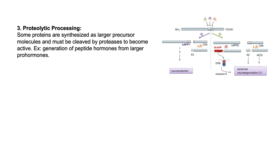Next is proteolytic processing. Some proteins are synthesized as larger precursor molecules and must be cleaved by proteases to become active. Examples include the activation of certain enzymes and the generation of peptide hormones. For instance, the cleavage of the larger protein APP produces a smaller neurodegenerating protein and a neuroprotective protein — demonstrating how proteolytic cleavage of a single larger protein leads to two proteins that perform totally opposite functions.